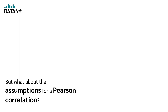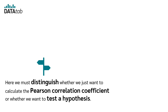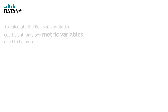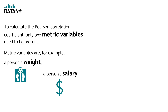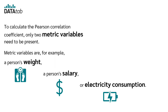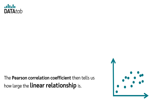But what about the assumptions for a Pearson correlation? We must distinguish whether we just want to calculate the Pearson correlation coefficient or whether we want to test a hypothesis. To calculate the Pearson correlation coefficient, only two metric variables need to be present. Metric variables are, for example, a person's weight, a person's salary, or electricity consumption. The Pearson correlation coefficient then tells us how large the linear relationship is.